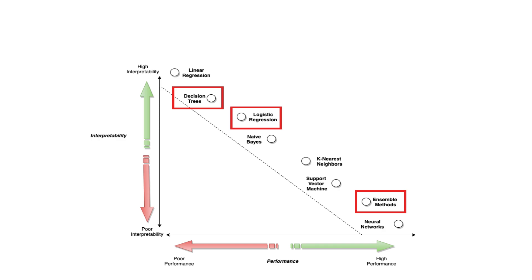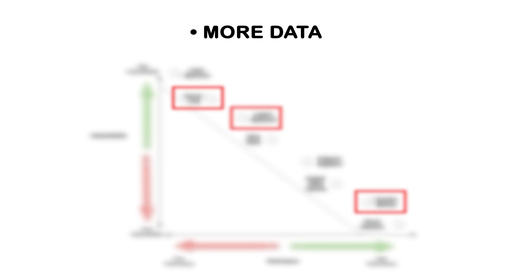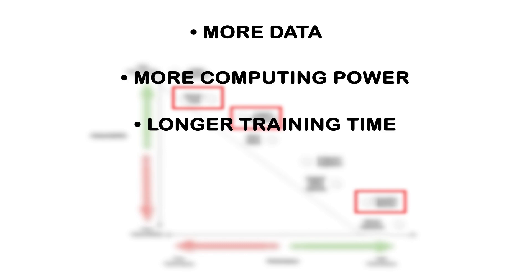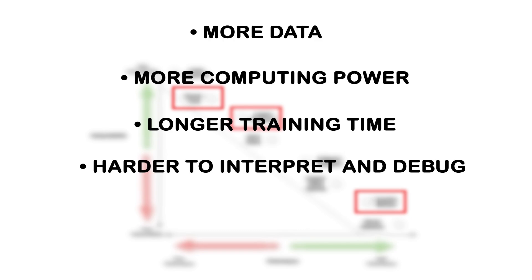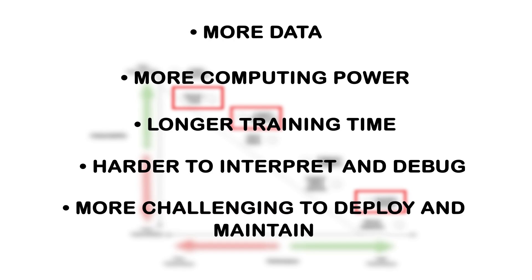Complex models come with significant drawbacks: they need more data to train effectively and prevent overfitting, require more computing power and longer training times — increasing both cost and development cycles — and are much harder to interpret and debug. When something goes wrong, it's often unclear why. They're also more challenging to deploy and maintain in production.